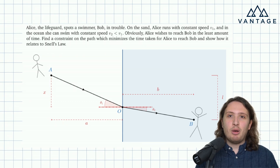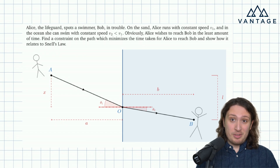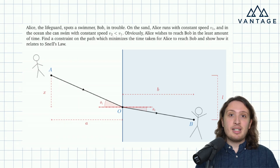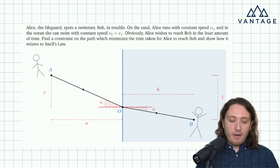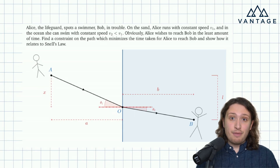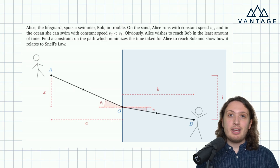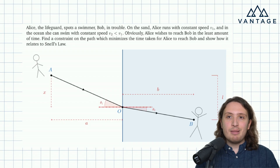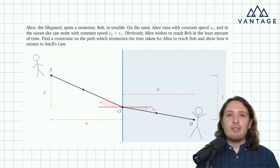She wants to reach Bob as quickly as possible — he's obviously really in trouble in the water — so her priority is to get to him in the least amount of time possible. We need to find a constraint on the path. Note they're not asking us to find specifically what the path is, but to find a constraint on the path which minimises the time that she takes to reach him, and we want to reason how it relates to Snell's Law.